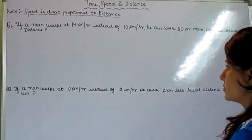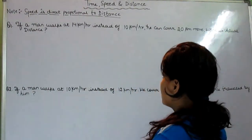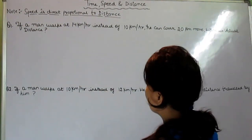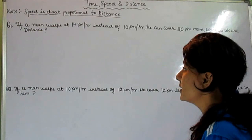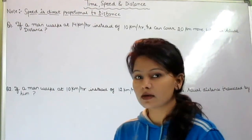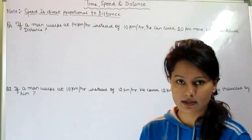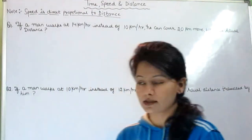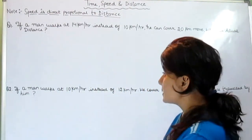Anyway, let's start with the chapter. The chapter is time, speed and distance. Here I have mentioned a note that speed is directly proportional to distance. It means when speed is more, we can cover more distance. When speed is less, distance covered by us will be less. These two questions are generally based on speed and distance.